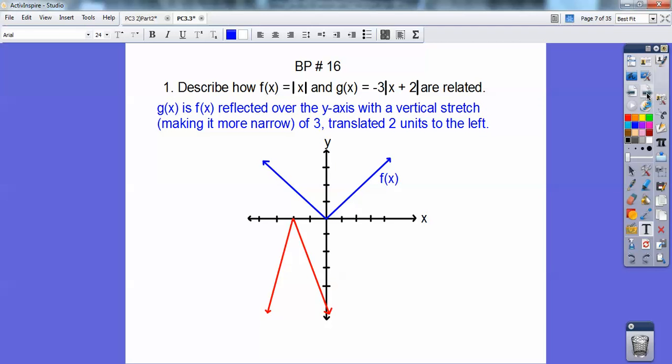Now, I know it didn't say graph, but I went ahead and graphed that right there. So here's f of x right here, and then here's g of x, the red guy right here. See how it's skinnier right there? So if we go over 1, it went down 3, so right about there, right there. So anyway, so that's the graph of that.